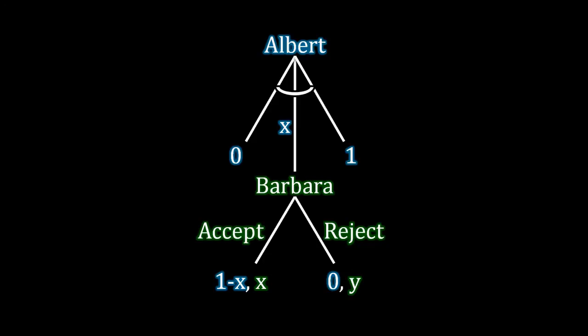We're going to focus on the situation where Y is a value between zero and one. If the value is less than zero, then Barbara is actually worse off if she rejects, so that's not a situation we care about too much. And if the value is greater than one, then there's no reason for Barbara to be negotiating with Albert — she would be better off going elsewhere. So we focus on Y between zero and one.